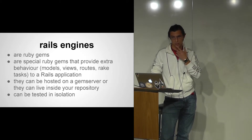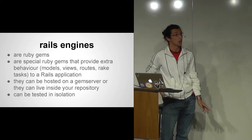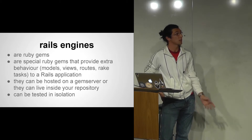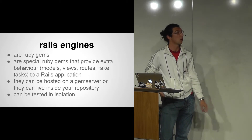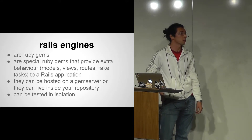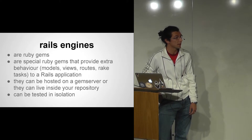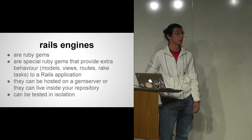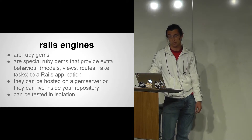Now, a quick description of what Rails engines are. They are special Ruby gems that provide actual behavior — a combination of models, views, routes, and tasks to a Rails application. They can be hosted on a gem server, but they can also live inside your repository. And they can be tested in isolation.